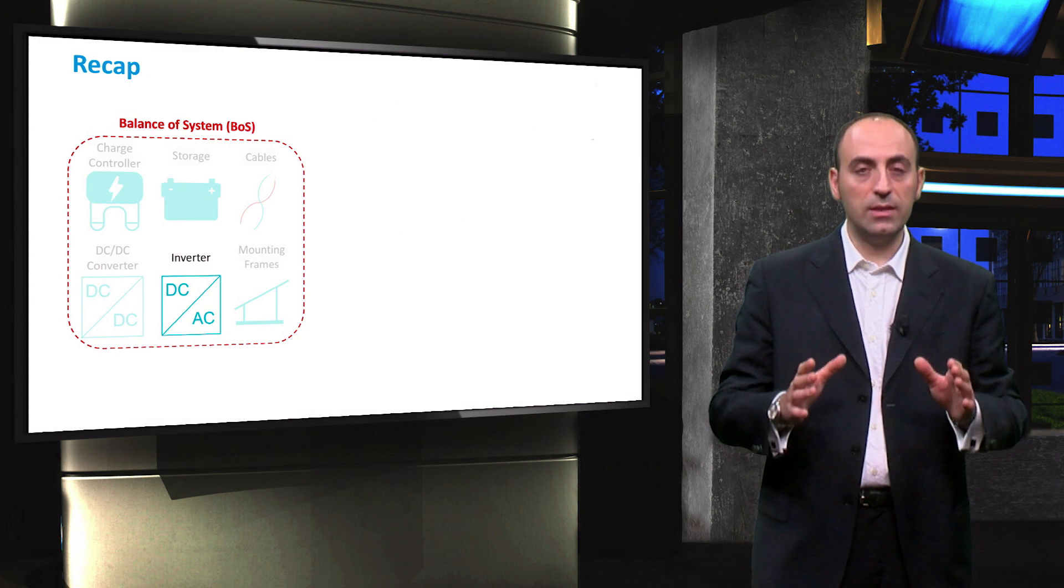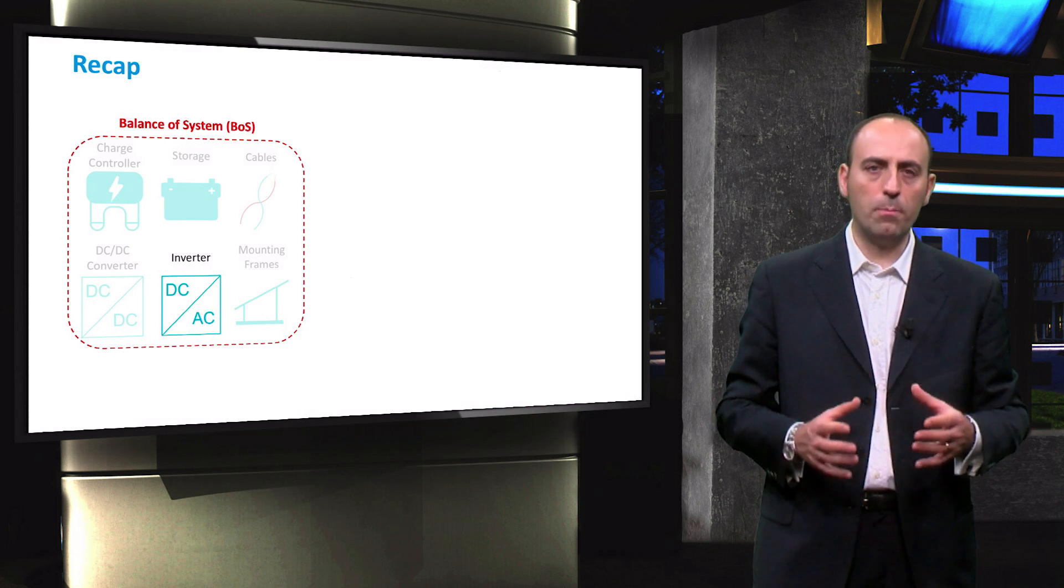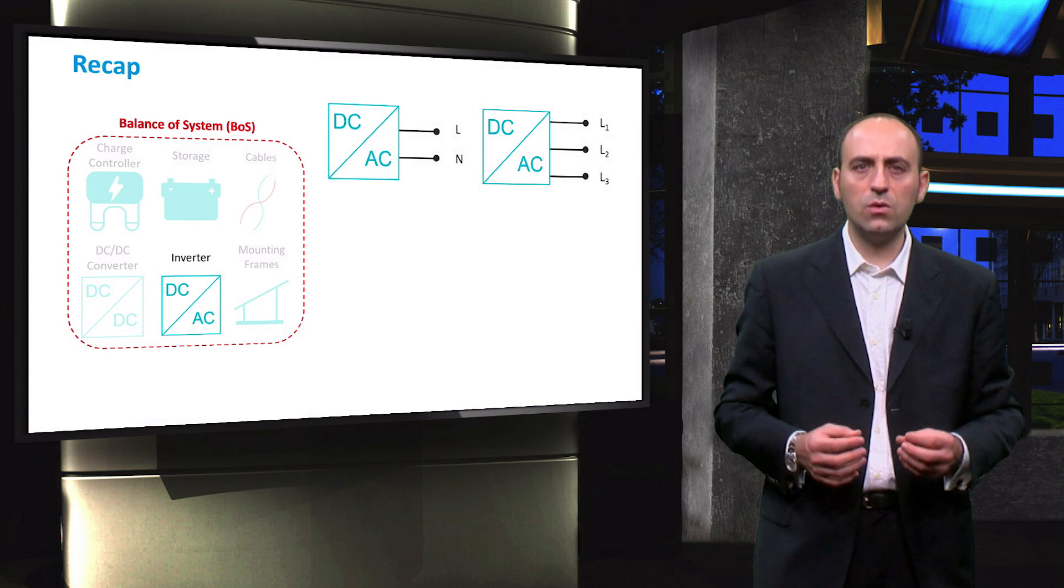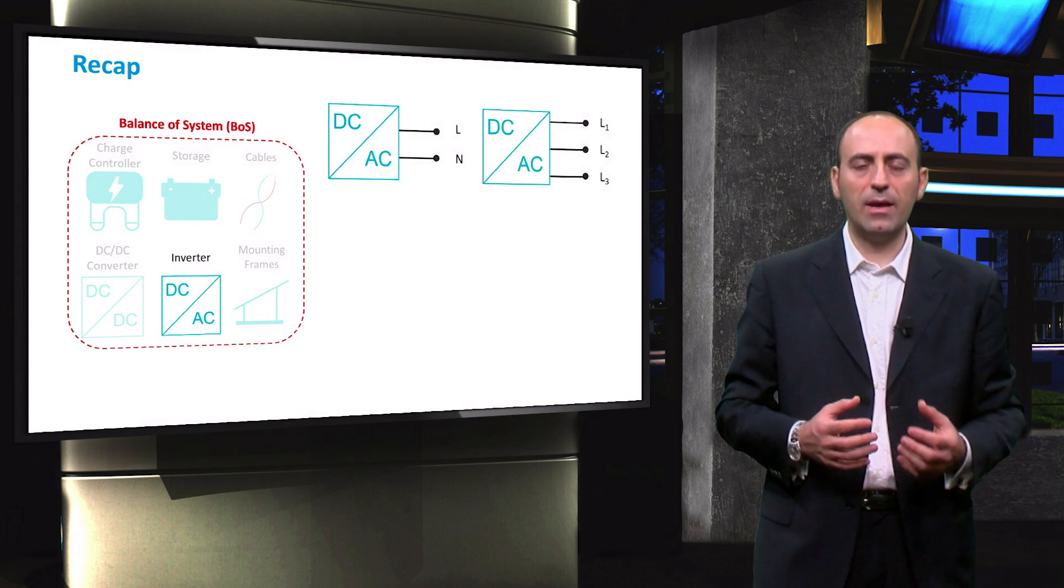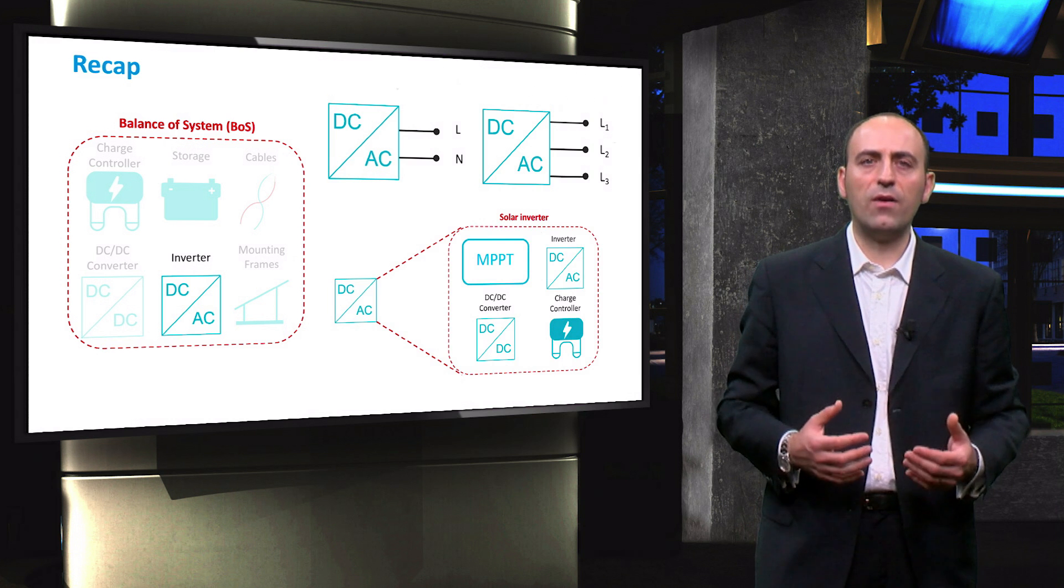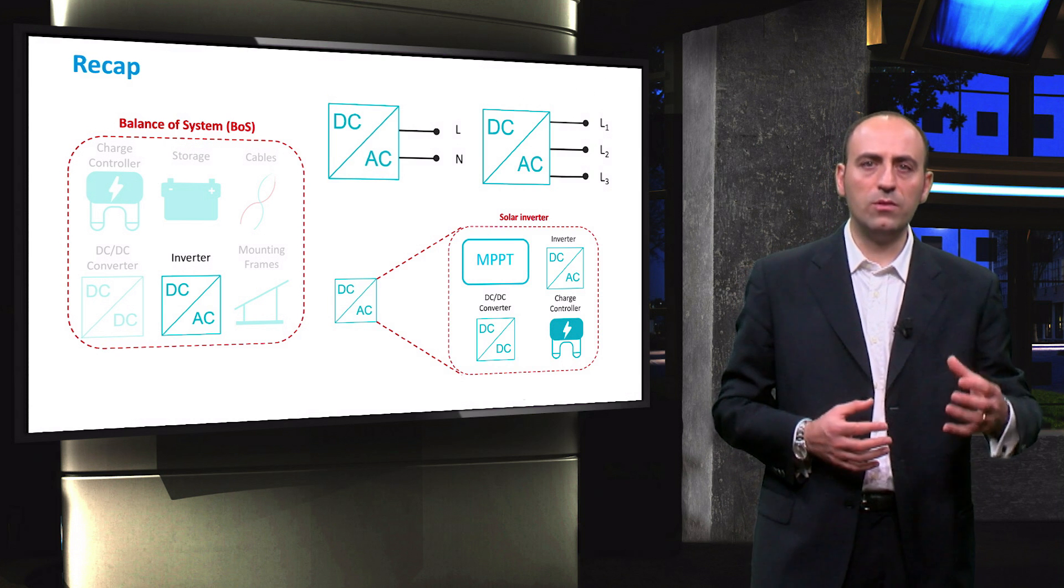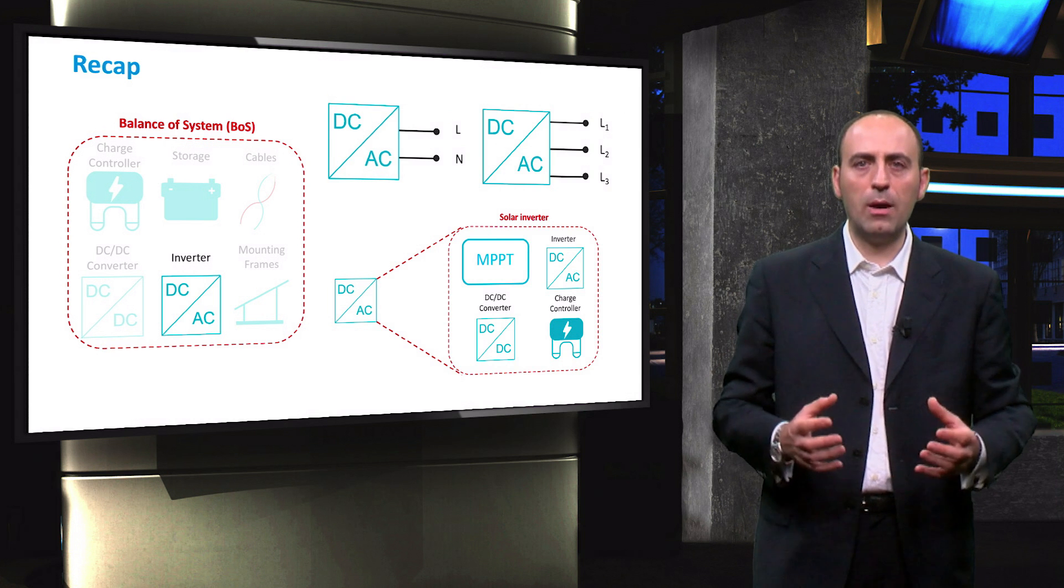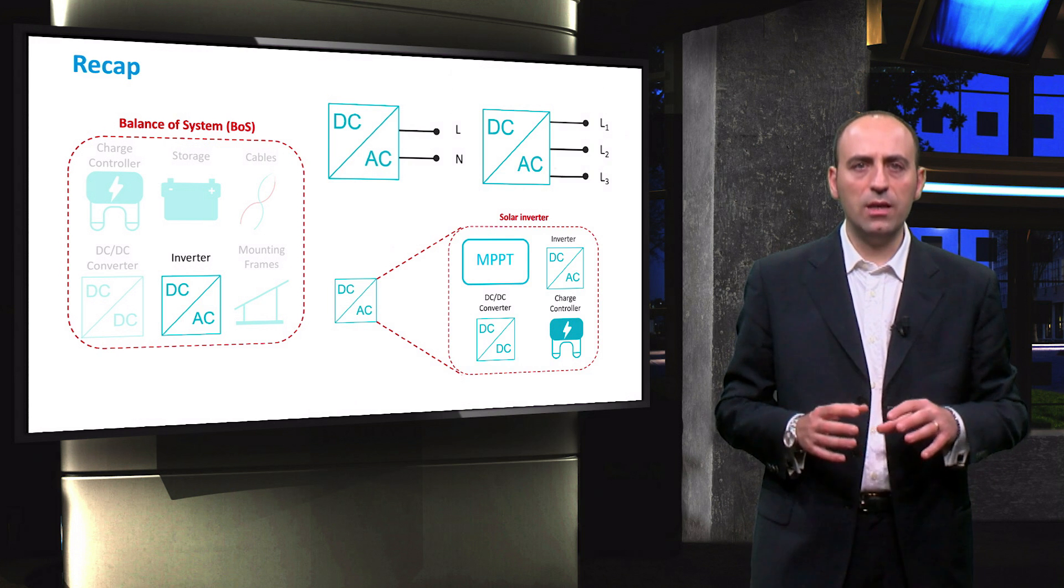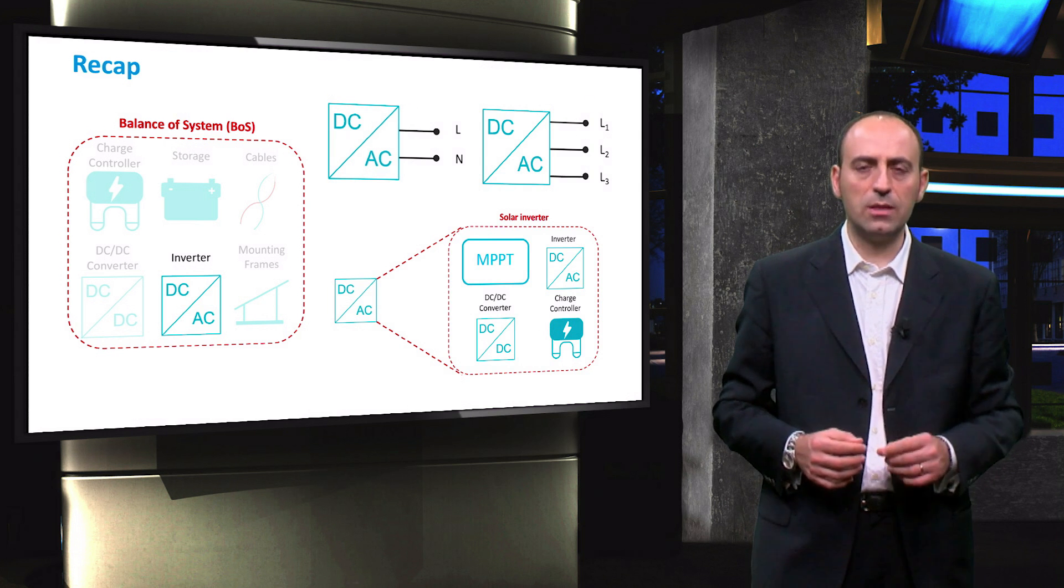Let's now recap what we have seen in this video. First of all, the inverter belongs to that part of the PV system, which is called the balance of system, or BOS. Then, we went through the main characteristics that every inverter shows. Also, we saw that depending on the size of the system and the application, a choice has to be made between a single-phase and three-phase inverter. Finally, we clarified that the word inverter can refer either to the power conversion section that modifies the signal from DC to AC, or to the overall power electronic device that includes also other components. In this video, we talked only about the inverter as a component. In the next video, we are going to see how the inverter is used in the different types of PV systems configuration.